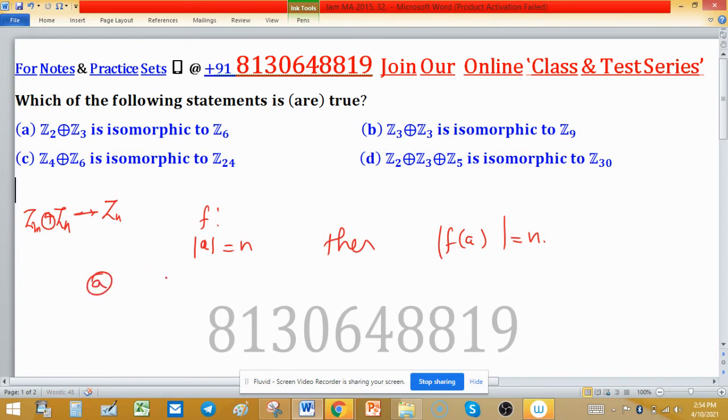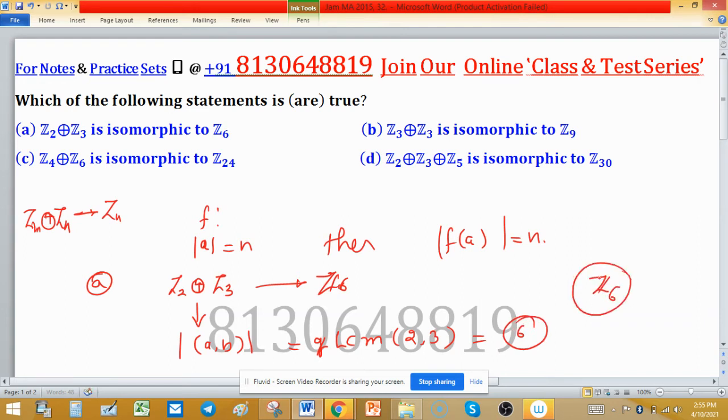For option A, Z2 direct sum with Z3 is isomorphic to Z6. We're checking if an element belongs to Z2⊕Z3, then its order will be the LCM of 2 and 3, which is 6. So an element of order 6 exists, and we know that in Z6 such an element also exists. So option A is correct.